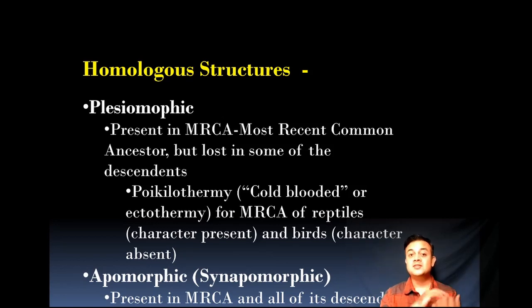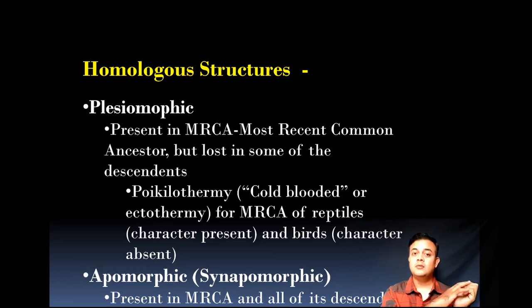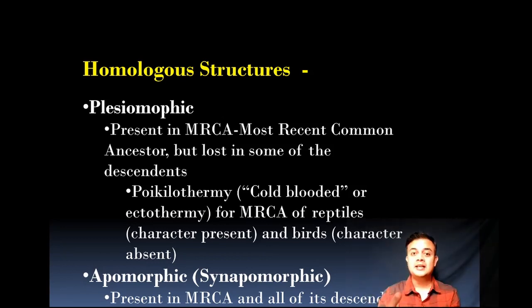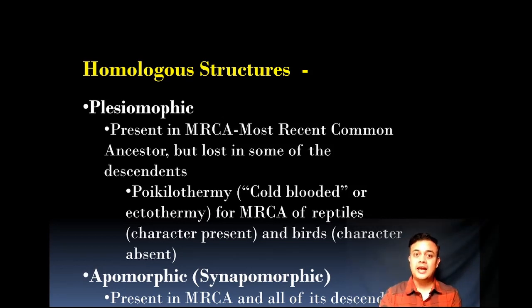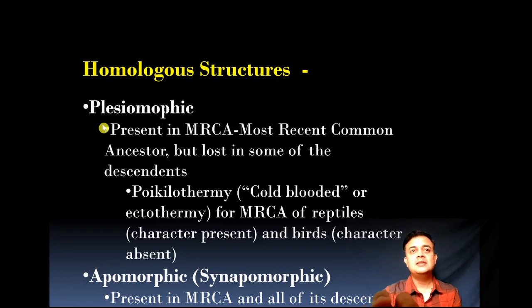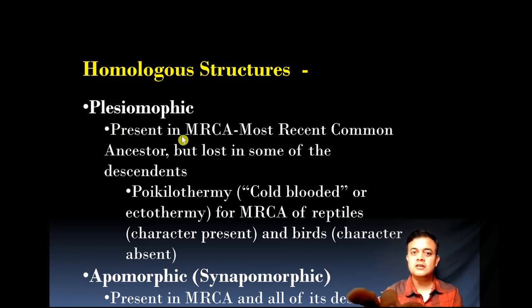Apomorphic means the ancestral character state is present in the MRCA and all of its descendants share that characteristic. So plesiomorphic represents evolutionary innovations, while apomorphic represents ancestral character states. Plesiomorphic character states are far more useful for phylogenetic reconstruction, as we will see later.